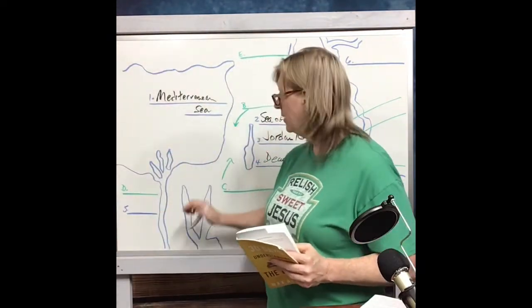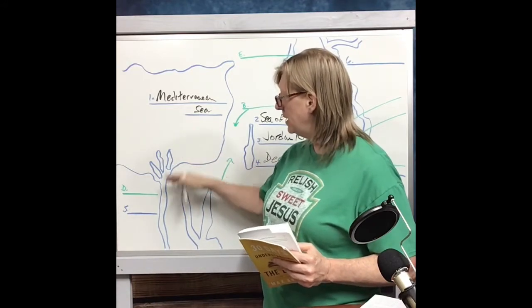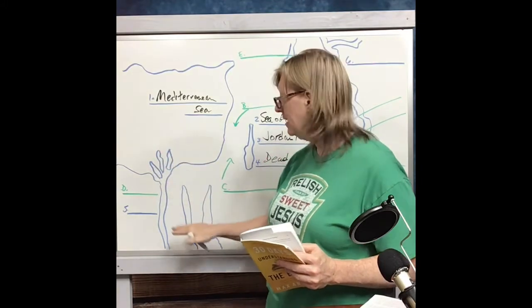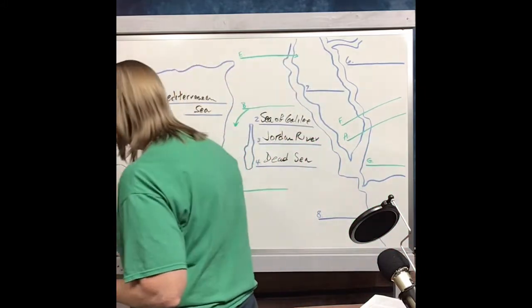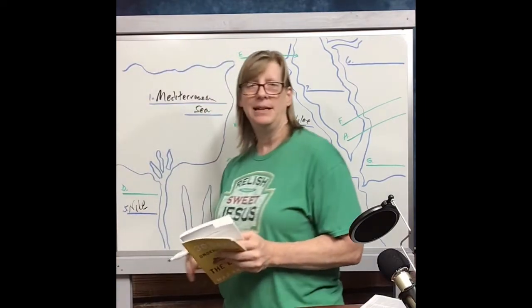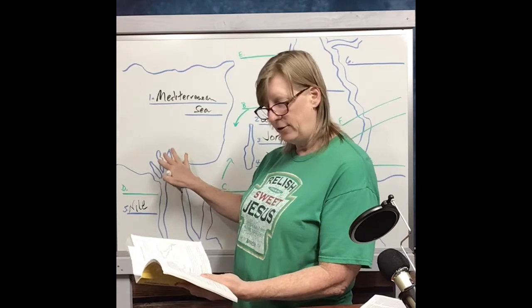Number five — we're going to shift over to this side of our map. Coming out of the Mediterranean, this river here is the Nile River. You've probably heard of the Nile River — a very famous river in Egypt, perhaps the most famous river in the world. It flows through the heart of Egypt, spreads out like several fingers, and empties into the Mediterranean Sea.